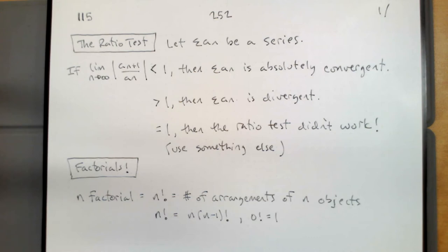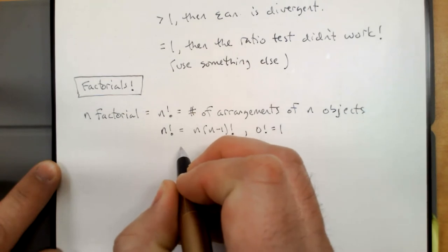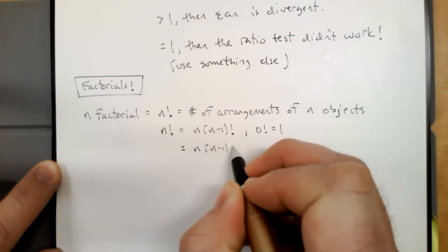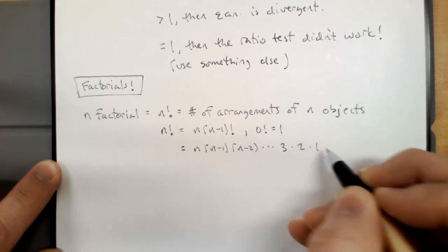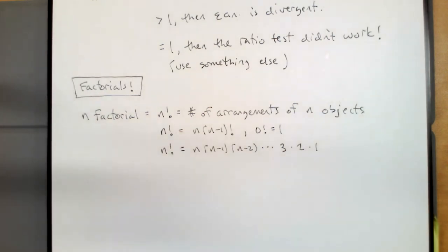This recursive definition — n factorial equals n times (n minus one) factorial — means we have to start with zero factorial equals one as our seed. We can also think of n factorial as the product of all positive integers less than or equal to n: n times (n−1) times (n−2) all the way down to 3 times 2 times 1.